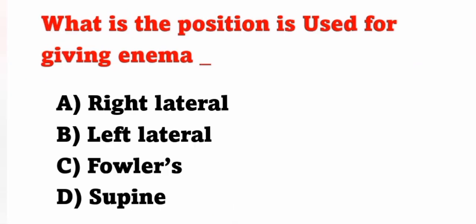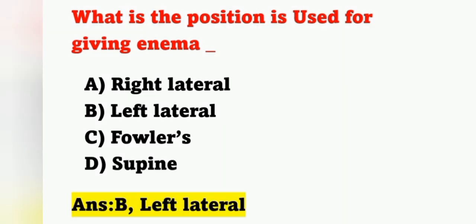Next question: what position is used for giving enema? Option A: right lateral position. Option B: left lateral position. Option C: Fowler's position. Option D: supine position. The position used for giving enema is left lateral position. Option B is the correct answer. Enema is an important topic with many possible questions. The height of the enema can should be adjusted to 18 inches or 45 centimeters above the patient.